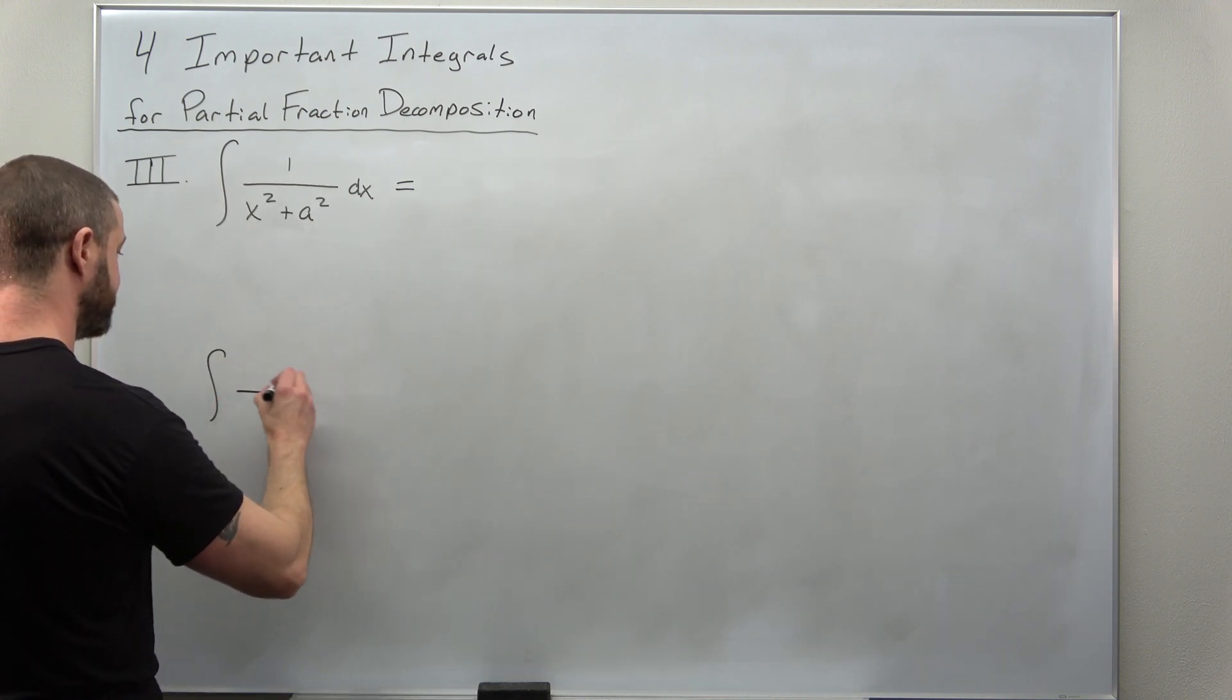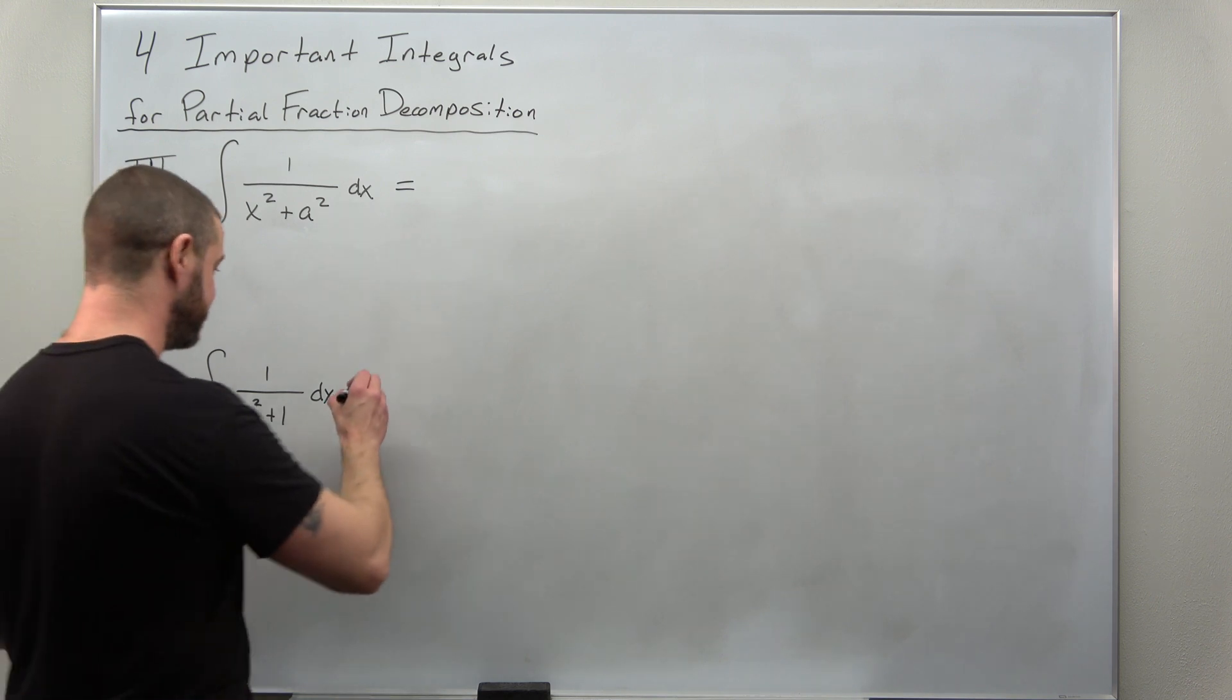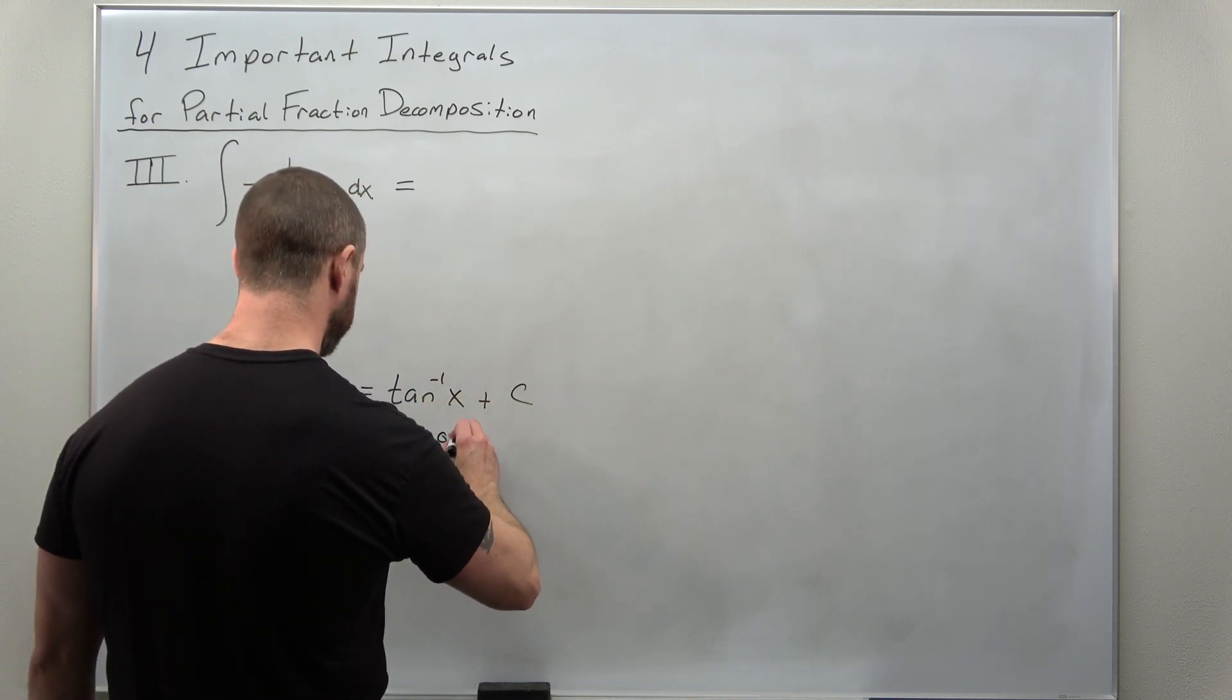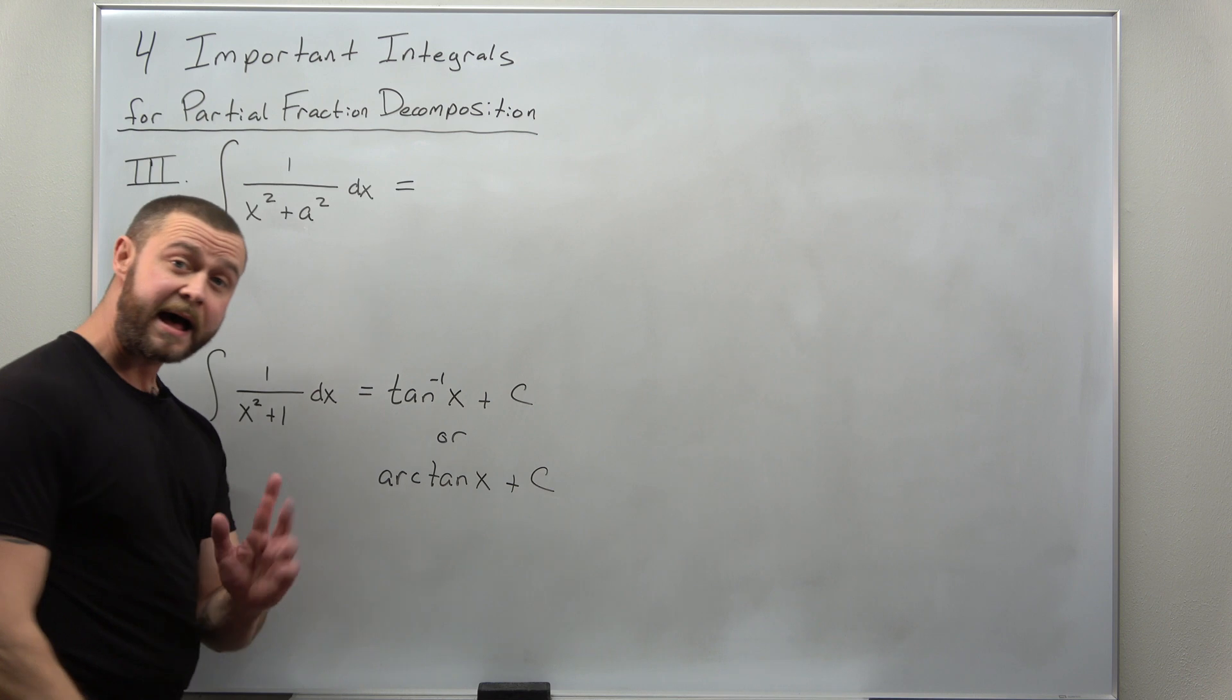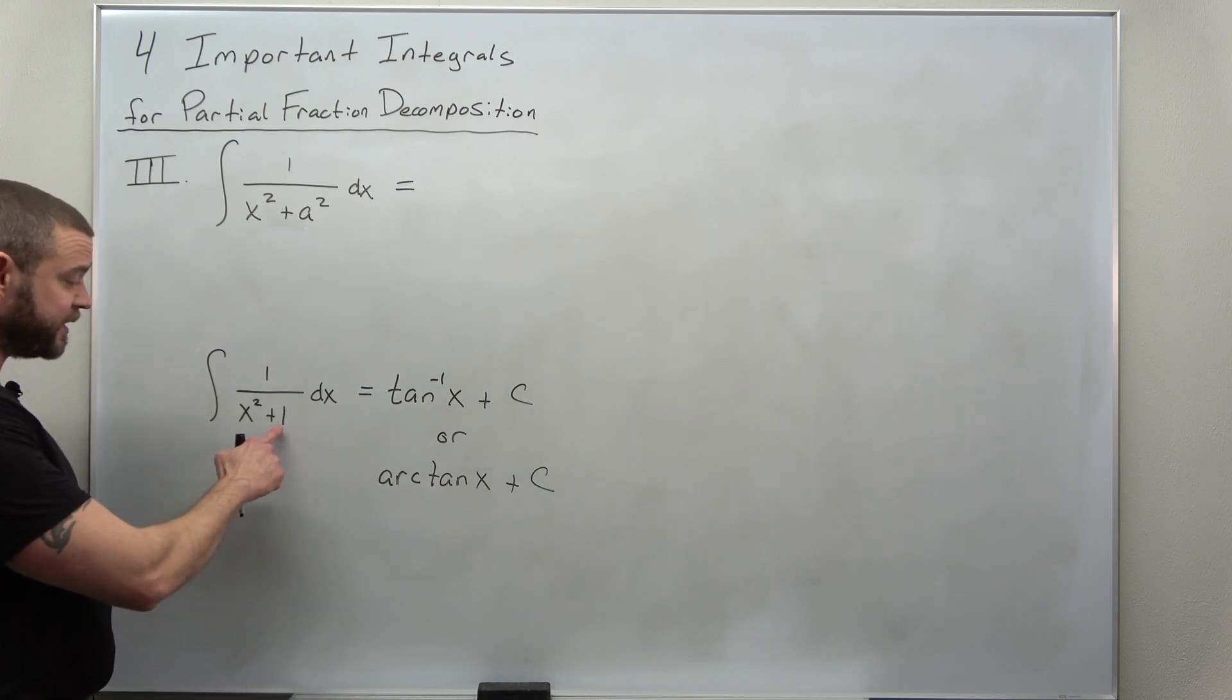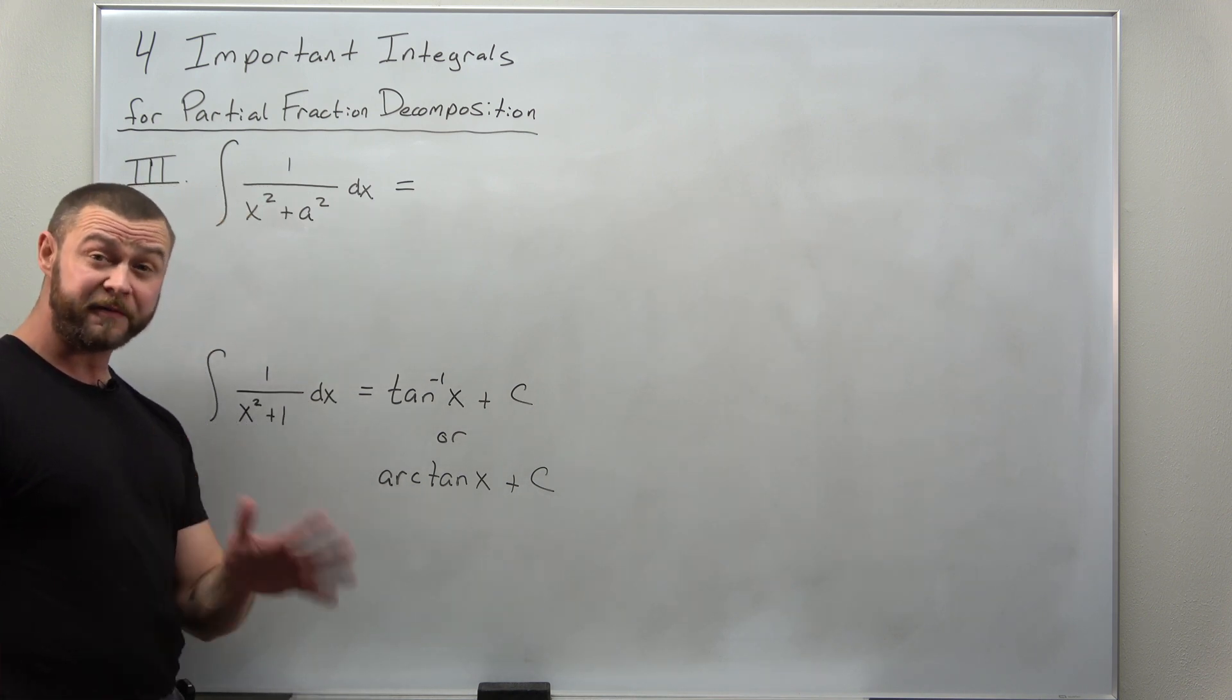So, this integral might look familiar, the integral of one over x squared plus one. And you probably recognize that as having the antiderivative of inverse tangent, and you might also write that as arctangent of x. Now, a lot of the times in partial fraction decomposition questions, the number in the denominator there is not one. It might be another number like 16, 9, 25. It might not even be a perfect square at all. Either way, the formula we're about to state will make quick work of one of these integrals.